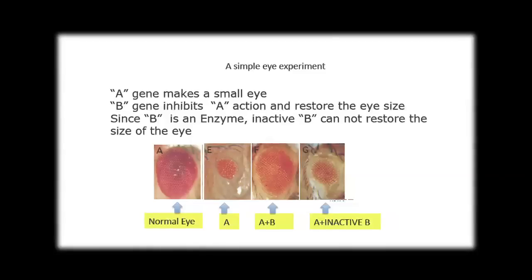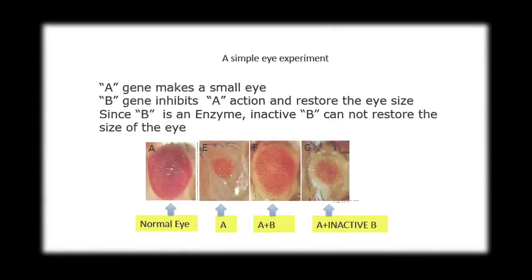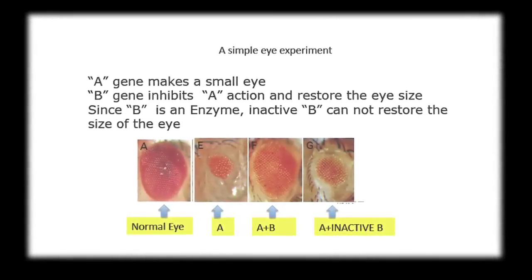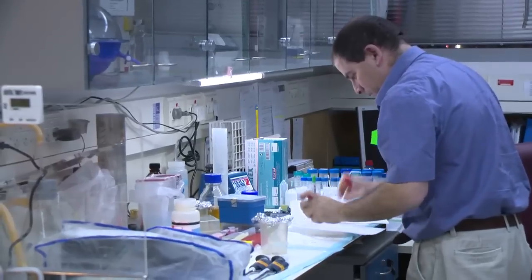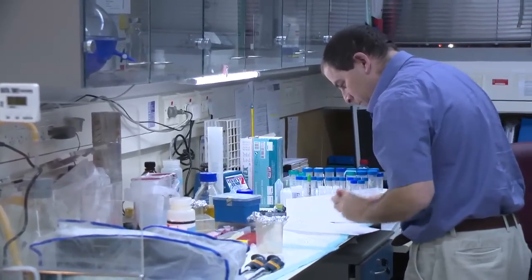And we can continue this experiment and say: is the enzymatic activity of the gene B that makes the eye bigger required for this process? Can we save a small eye fruit fly with an active enzyme or with a non-active enzyme? As we predict, only the active enzyme can rescue or save and change the small eye to become a big eye. Meaning that our preliminary prediction that two genes have some kind of play between one another is really true. But this is true in fruit flies only.